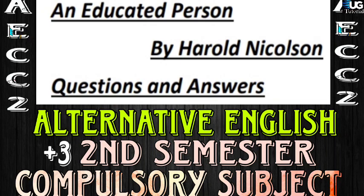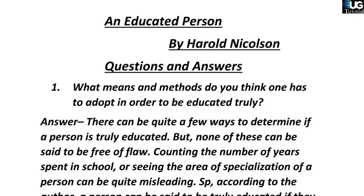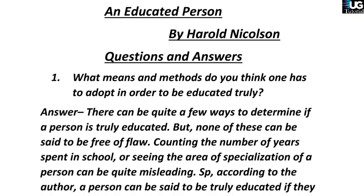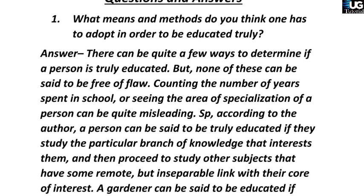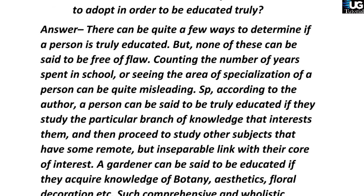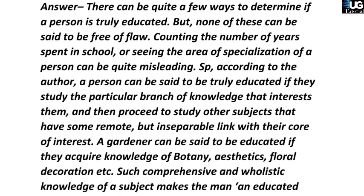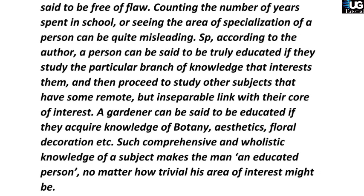An Educated Person by Harold Nicholson — Questions and Answers. Question one: What means and methods do you think one has to adopt in order to be truly educated? Answer: There can be quite a few ways to determine if a person is truly educated, but none of these can be said to be free of flaw. Counting the number of years spent in school or seeing the area of specialization of a person can be quite limited measures.